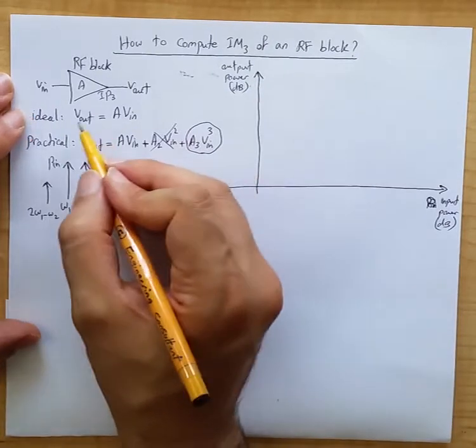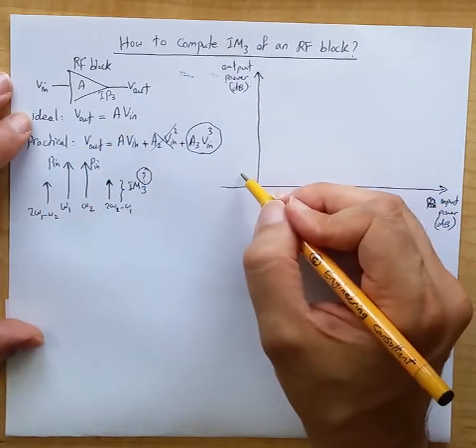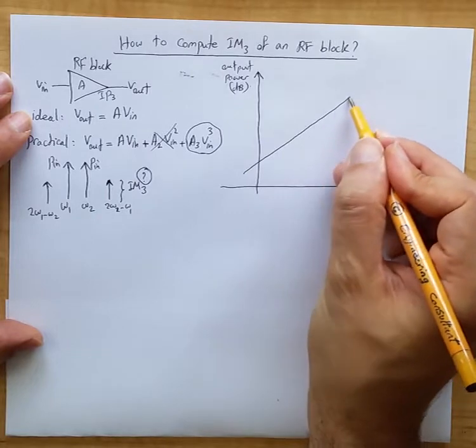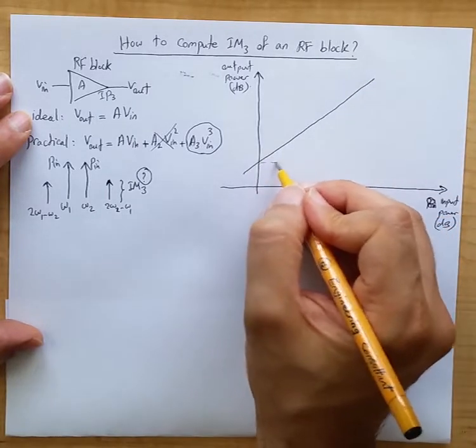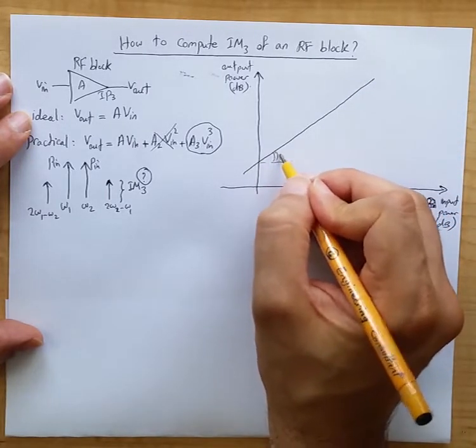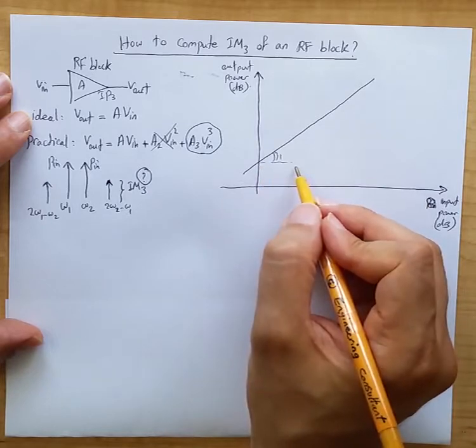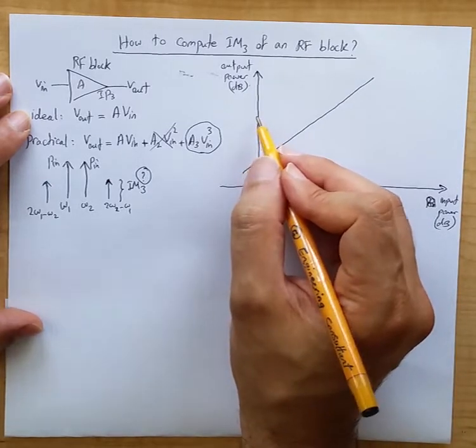If it was only an ideal RF block, what we would see would be a linear increase with a tangent of 1. A 1 dB increase in input power results in 1 dB increase in output power.